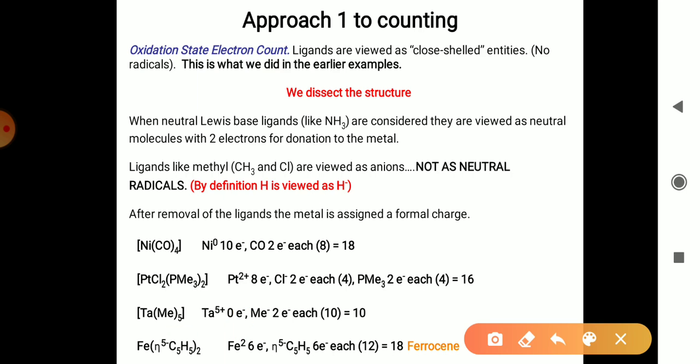The last example is Fe(η5-C5H5)2. This is ferrocene, a sandwich compound which follows the 18 electron rule. By this method, you can calculate the EAN number of each complex and determine whether the particular complex follows the 18 electron rule or not.